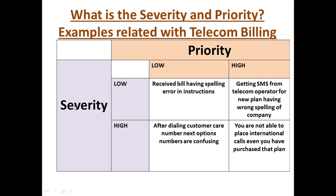The first type of severity is critical, where your software will not run at all. For example, with respect to telecom billing, not being able to place a call is a critical severity. High severity means an unexpected or fatal error which can crash your entire system or software. For example, your SIM card was working in the morning but is now not working — that is a high severity issue.